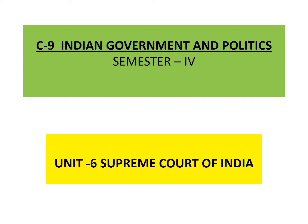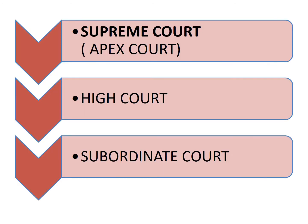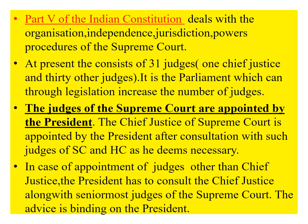Hello dear students, today I'll be discussing the Supreme Court of India, from Indian Government and Politics, relevant for semester 4. This is the structure of the Indian judicial system. Unlike the American system, which has a double system of judiciary — where every state in the US federation has its own judicial system — in India we have an integrated judiciary. There is a Supreme Court at the apex, and the High Courts and subordinate courts follow below it.